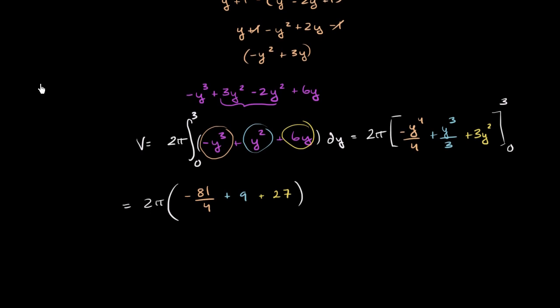And now we are ready to simplify. So this is going to be, let's just add them all up. 9 plus 27 is 36. And if we want to add it to negative 81 over 4, we just have to find a common denominator. So all of this business is going to be equal to 2π times, and so our common denominator can be 4. We have negative 81 over 4. And then 36 times 4 is 144.